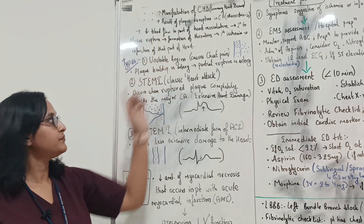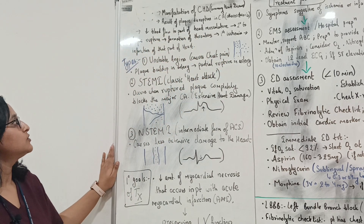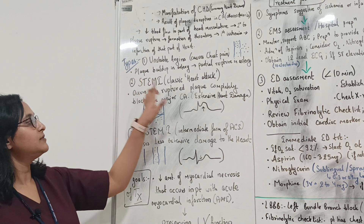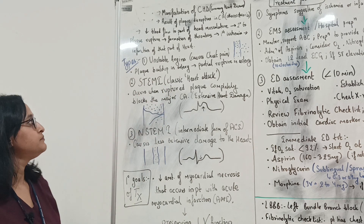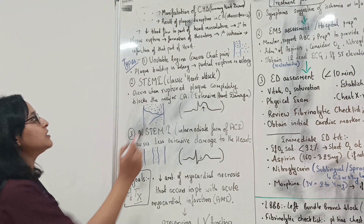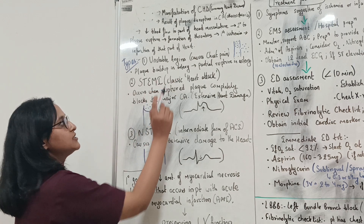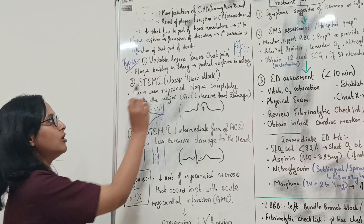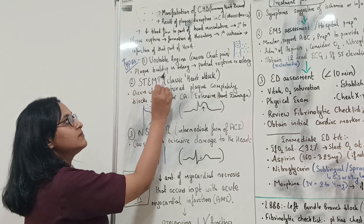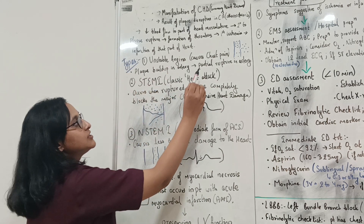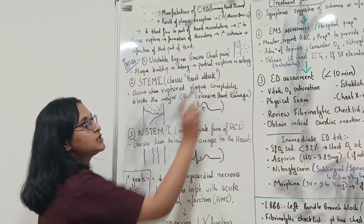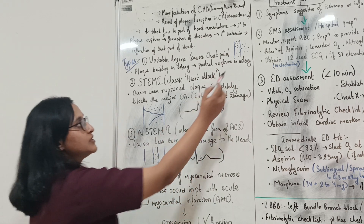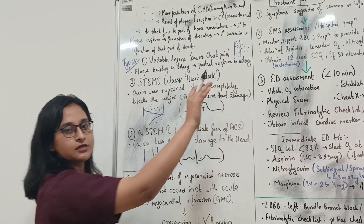The first type of ACS is unstable angina, which causes chest pain. It occurs when there is a plaque build-up in the artery with a partial rupture, as you can see in the figure, so blood flow is not accurate.